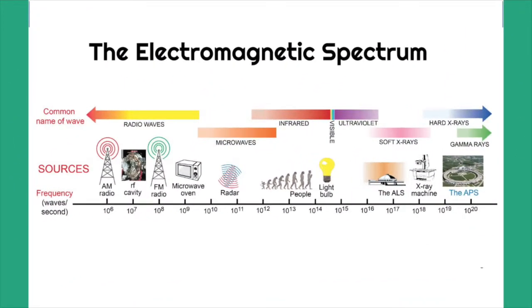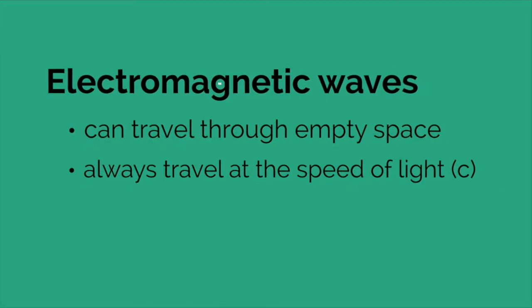Visible light is one form of electromagnetic waves, or electromagnetic radiation. Other forms include radio waves, microwaves, infrared, ultraviolet, x-rays, and gamma rays. So what do these different types of electromagnetic radiations have in common, and how are they different?